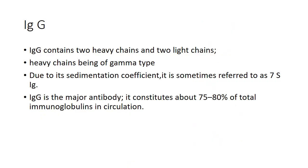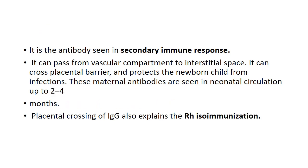Now immunoglobulin G. IgG contains two heavy chains and two light chains, with heavy chains being of the gamma type. Due to its sedimentation coefficient, it is sometimes referred to as the 7S immunoglobulin. IgG is the major antibody, constituting about 75 to 80 percent of total immunoglobulin in circulation. It is the antibody seen in the secondary immune response. It can pass from the vascular compartment to the interstitial space, and it can cross the placental barrier to protect the newborn child from infection. These maternal antibodies are seen in neonatal circulation up to 2 to 4 months.